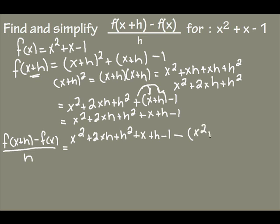x squared plus x minus 1. Remember that whole thing is divided by - trying to make a straight line here - divided by h. Now when I simplify, I see this is minus f of x, so I need to distribute through my negative, or my negative 1.